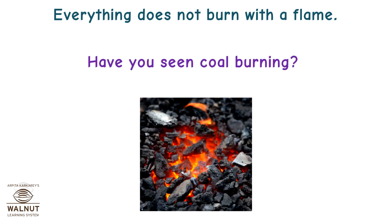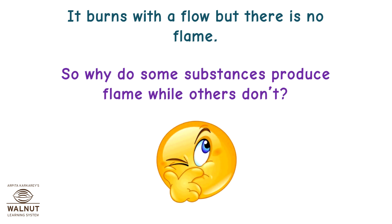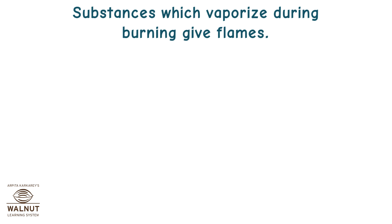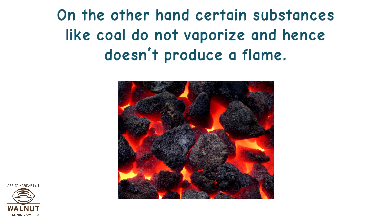Have you seen coal burning? It burns with a glow, but there is no flame. So why do some substances produce flame while others don't? Substances which vaporize during burning give flames — for example, combustion of kerosene and oil produces flame. Certain substances like coal do not vaporize and hence don't produce a flame.